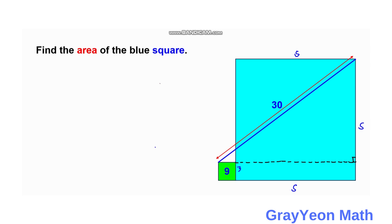This distance is actually S minus 3, and this distance will be S plus 3. So we actually form a right triangle with these dimensions.